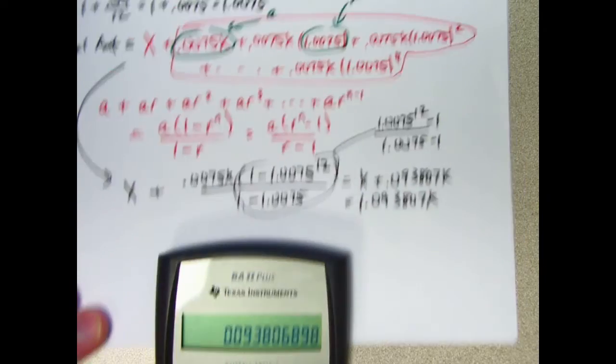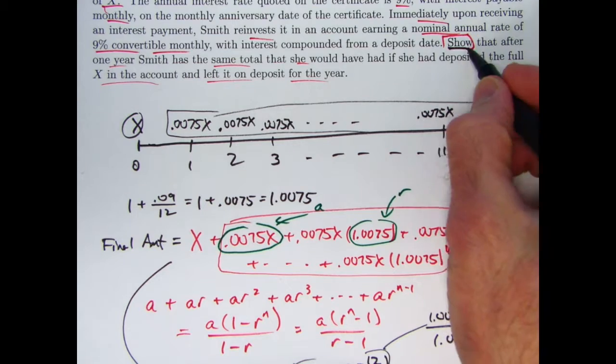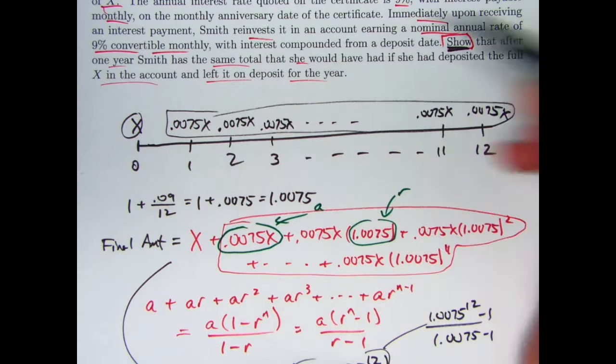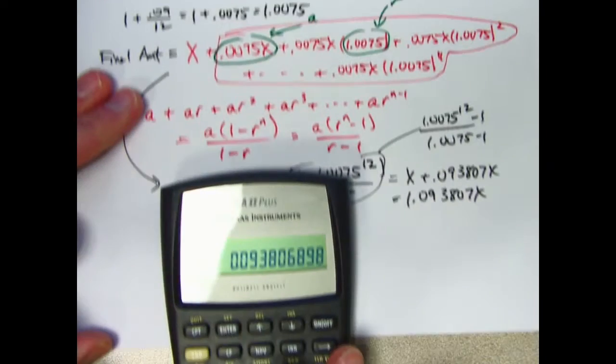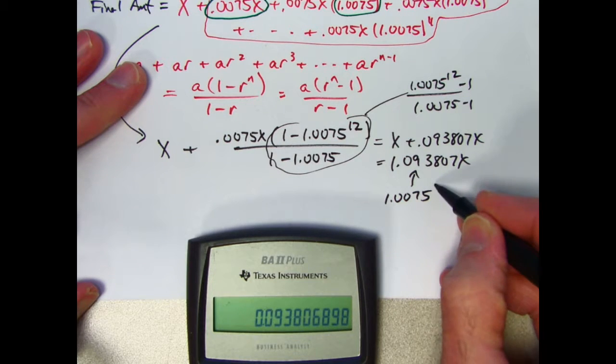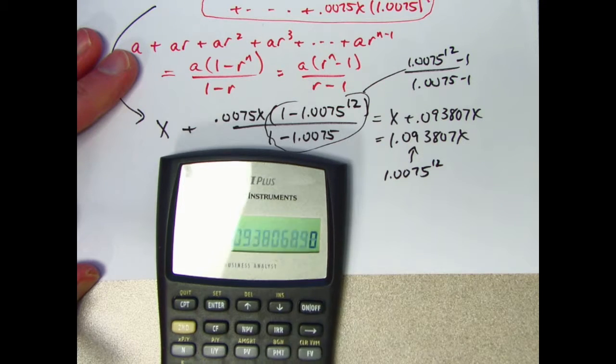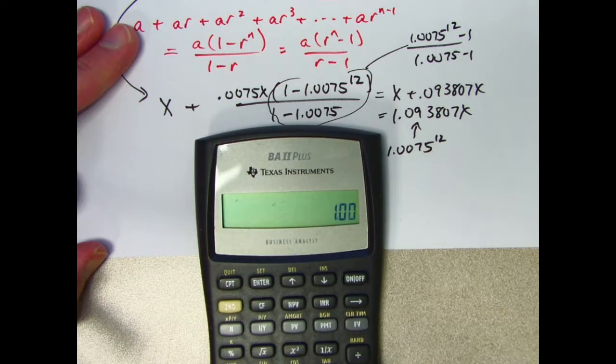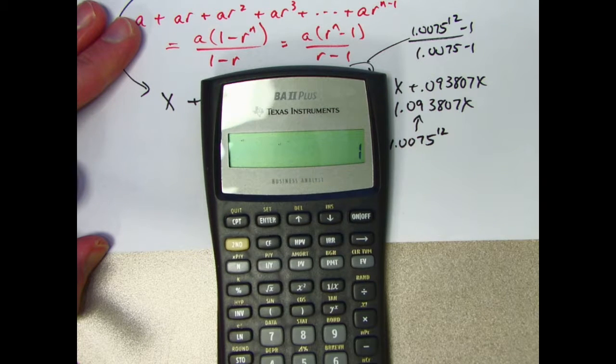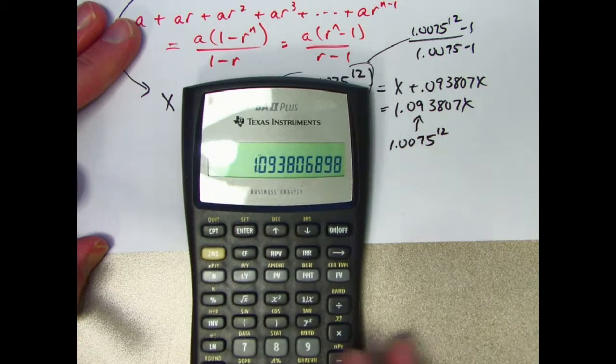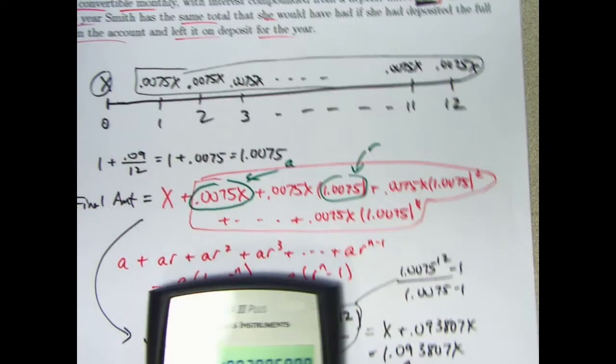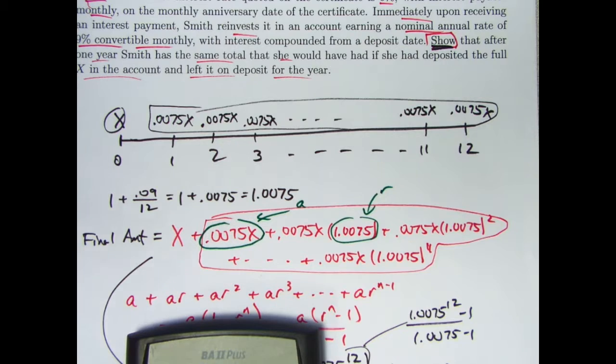What should this be the same as to finish the problem? We were trying to show that after a full one year, we get the same balance as if she had put X in the account and left it in there for the entire year without this reinvestment of the interest. In other words, this number should be 1.0075 to the 12th. Is it? Let's see. I hope so. 1.0075 to the 12th power. There we go. It is the same number. That's what we've done now. We have done what was requested. Verified that this fancy reinvestment scheme doesn't really gain you anything.